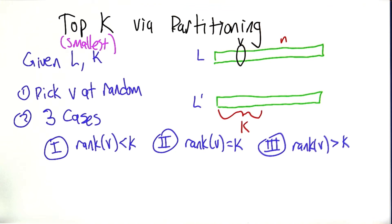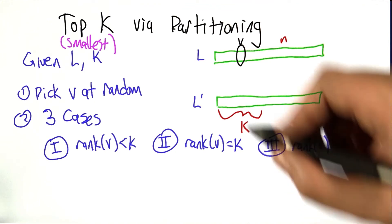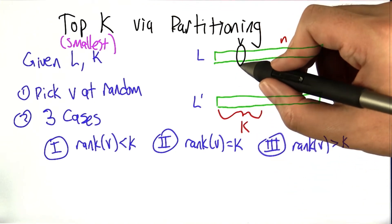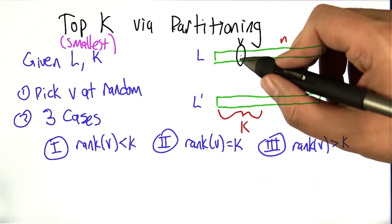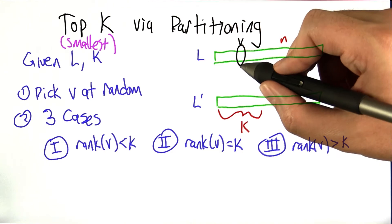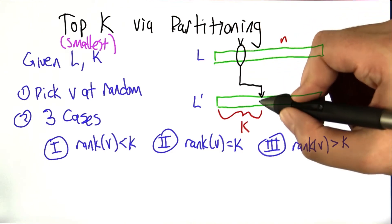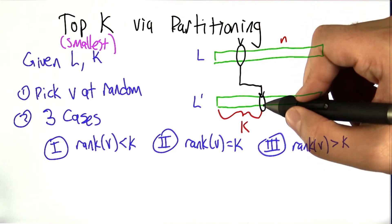And there's a couple different cases that can happen. So we're going to look first at this case 2 because that's the super duper easy one. So in this case 2, we picked some v at random, and it just so happens that we totally lucked out, and the rank of v is exactly k.